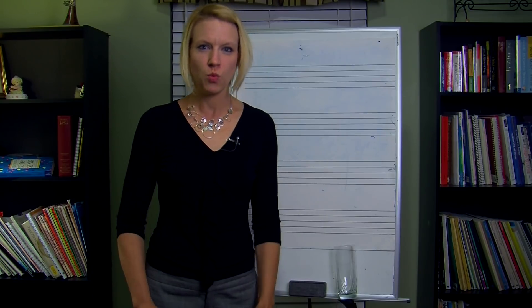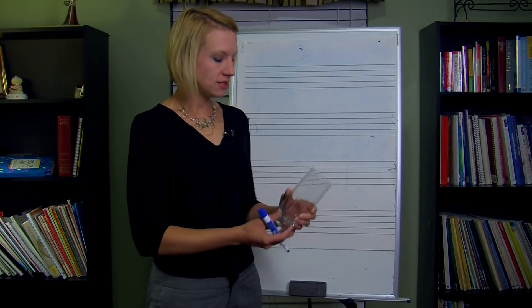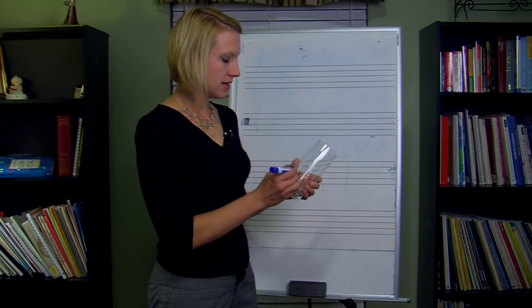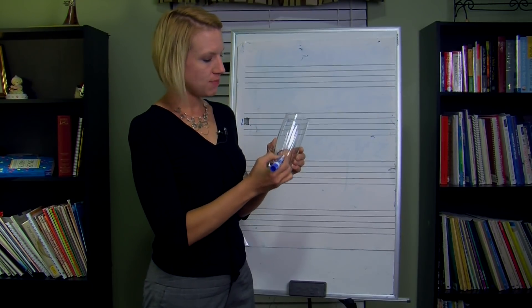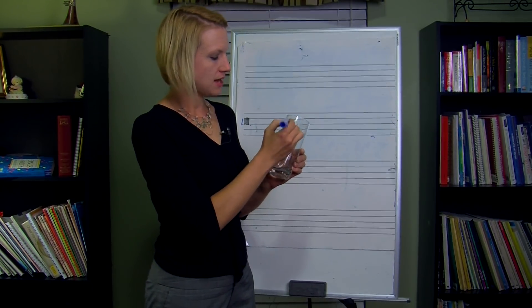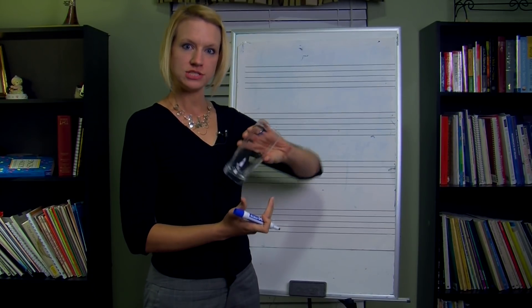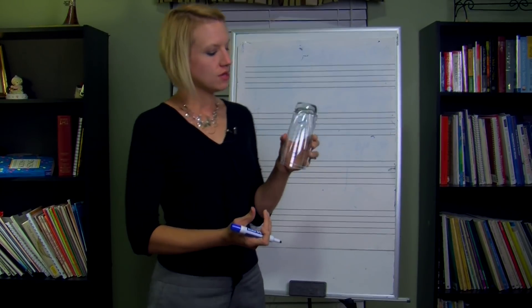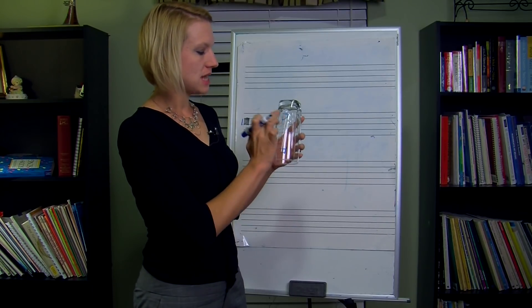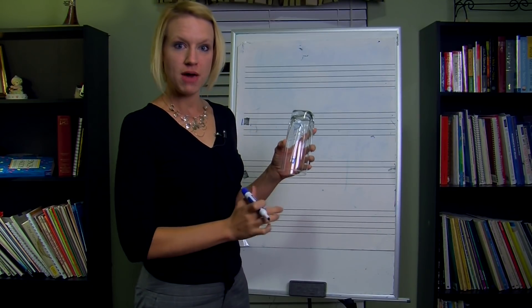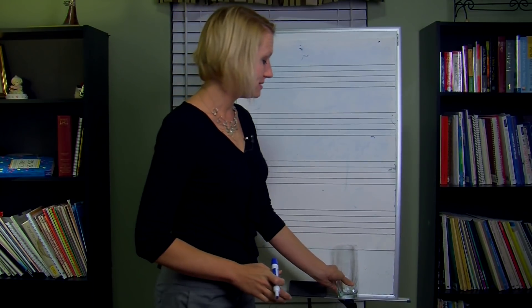If you invert something, what are you doing? If I took this glass and I inverted it — I wrote a C here at the bottom and an F here at the top — if I invert it, I'm really just flipping it upside down. So my C that was on the bottom is now on the top, and my F's on the bottom. It works the exact same way when we're looking at the staff.